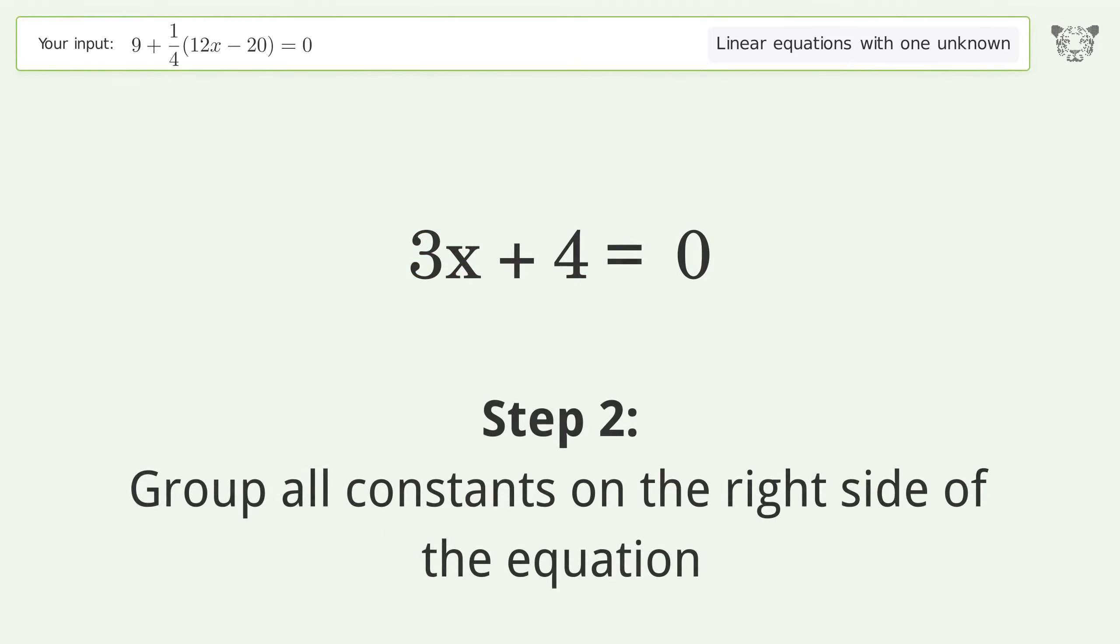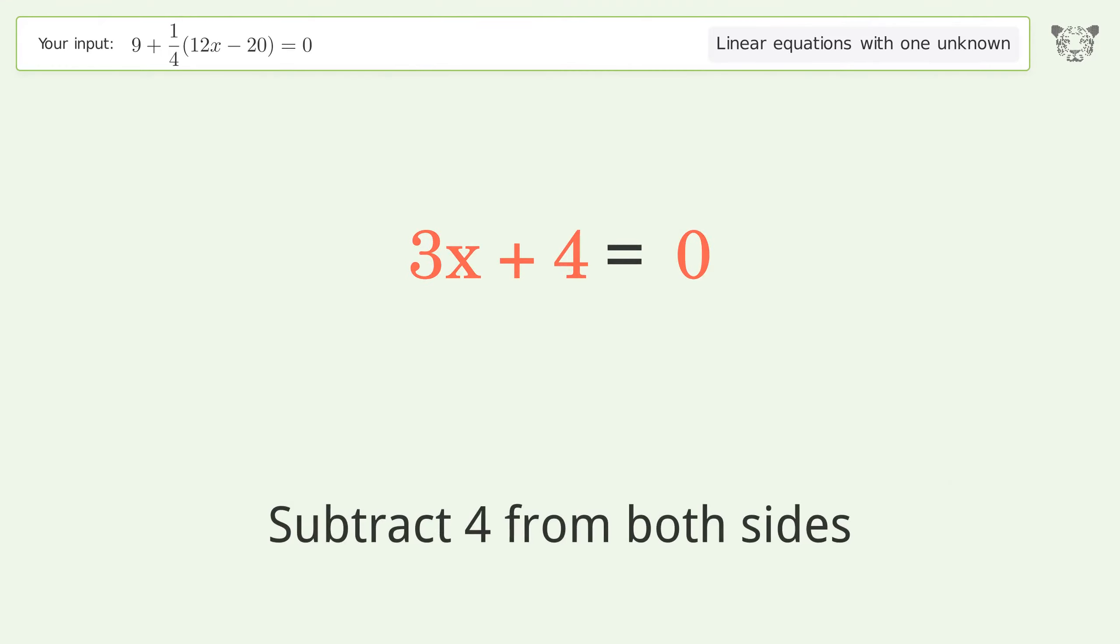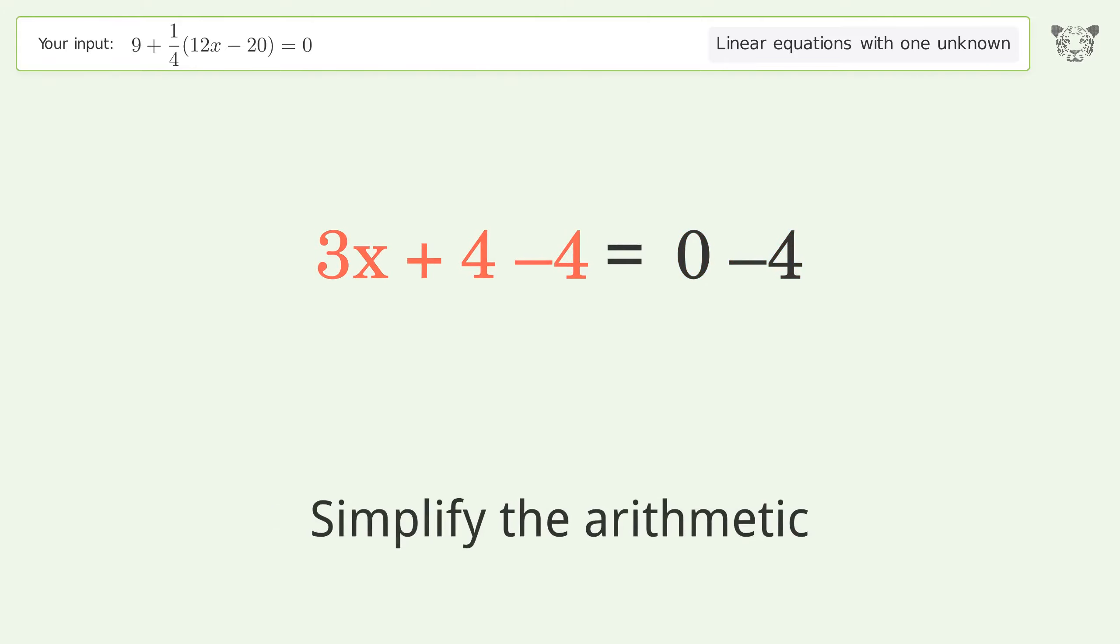Group all constants on the right side of the equation. Subtract 4 from both sides. Simplify the arithmetic.